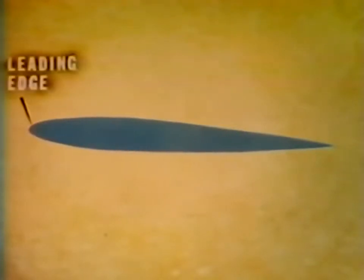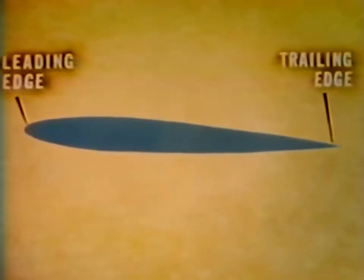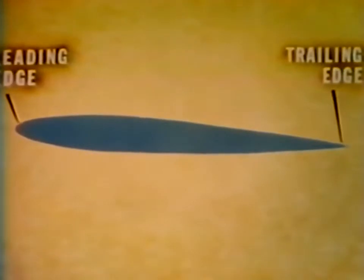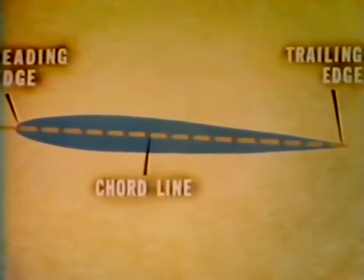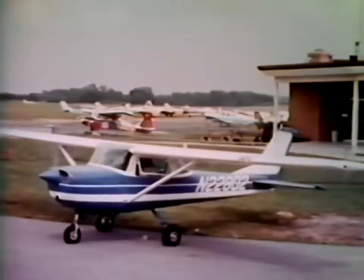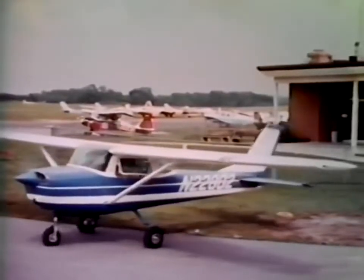To begin with, airfoils have a rounded leading edge and a pointed trailing edge. The center line from the center of the leading edge to the point of the trailing edge is called the cord line. We also speak of camber of an airfoil — camber refers to curvature. We've spoken of the forces of lift, angle of attack, and stall that work on an airfoil, but there are two others.